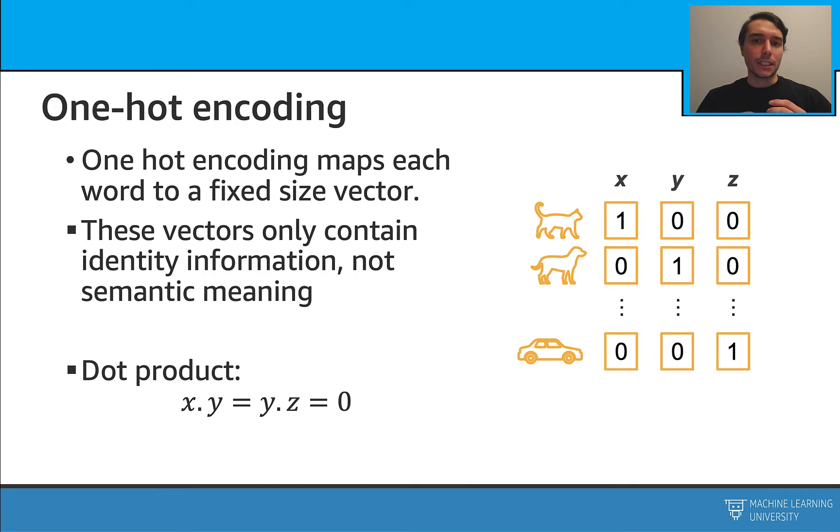These vectors do not capture any kind of semantic meaning of the words. In order to understand similarity between the vectors, we can use dot product. Dot product simply means multiplying each item in a vector and then summing them up. If this is a large number, it means the vectors are similar. If they are not, it means they are not similar. When we run dot product here, we will see that all of them are 0.